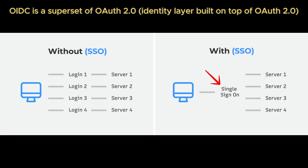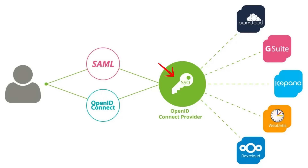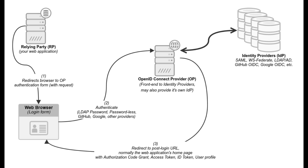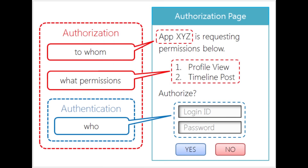Like SAML, OIDC is widely used for single sign-on, where a user can use their credentials from one trusted identity provider to access multiple applications or services. While OAuth 2.0 can certainly operate without OIDC, that's only appropriate when user identity isn't needed — for example, when a backend service just needs permission to access an API. But when you need to actually know who the user is and establish a secure session tied to that identity, OpenID Connect is the necessary extension that turns OAuth's authorization into reliable authentication.